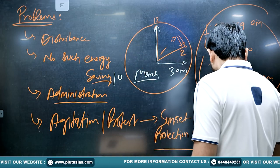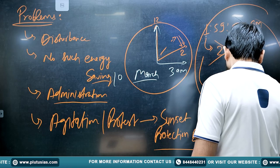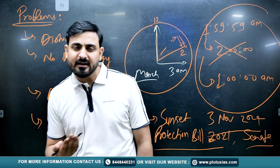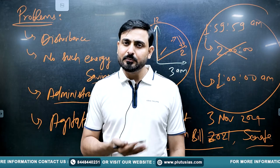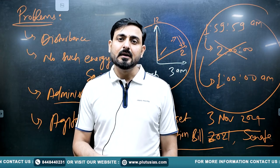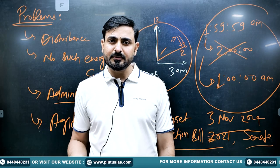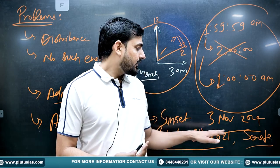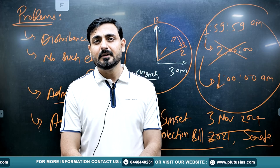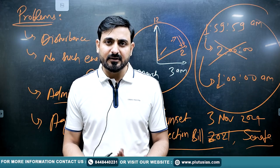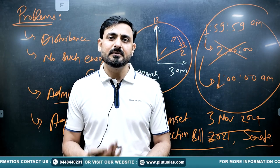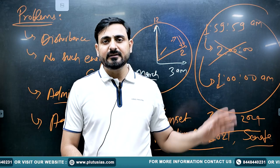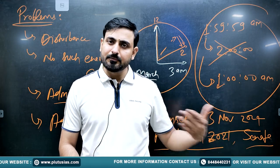The US Senate — the upper house, like India's Rajya Sabha — has approved this bill. It is now under the House of Representatives (like India's Lok Sabha) and also requires the assent of the President of the USA. Once approved, this practice of twice-yearly clock changing is likely to be renounced forever.